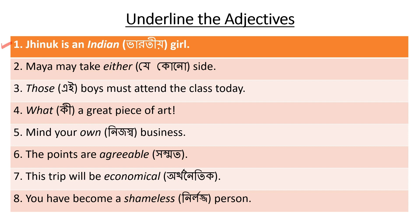Sentence number 1: Jhinuk is an Indian girl. Jhinuk is an Indian woman. So 'Indian' is underlined because Indian is the adjective. Number 2: Maya may take either side. Maya can take either side. So 'either' describes 'side', therefore either is the adjective.